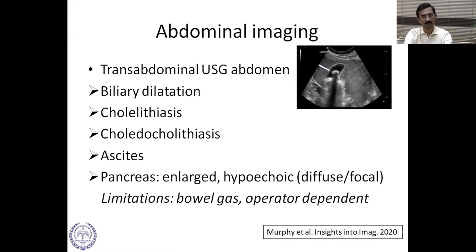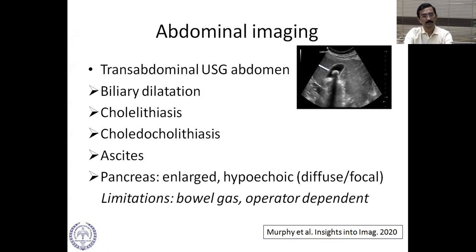A trans-abdominal ultrasound of the abdomen is a common investigation, very useful when there is a biliary cause for pancreatitis — we look for biliary dilatation, stones in the gallbladder and bile duct. You might see ascites, and the pancreas may appear enlarged and hypoechoic, diffusely or focally. Limiting factors include bowel gas obscuring visualization and operator dependence.